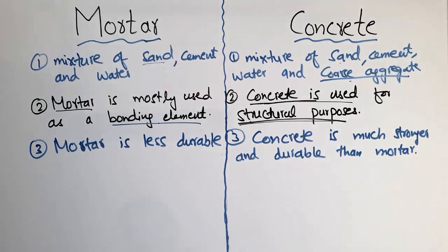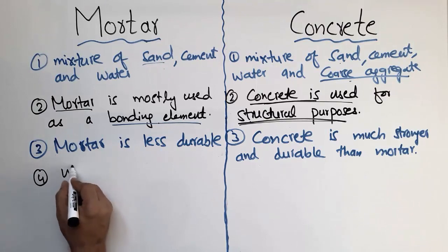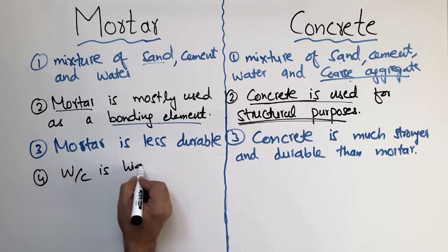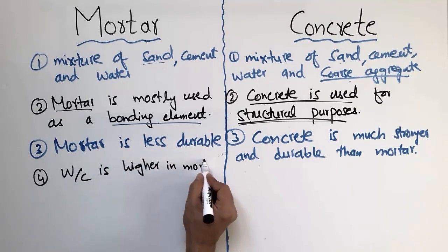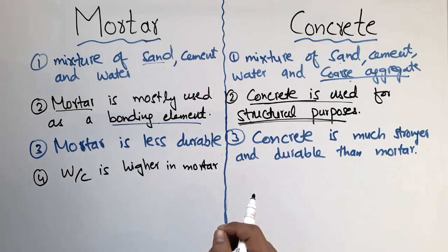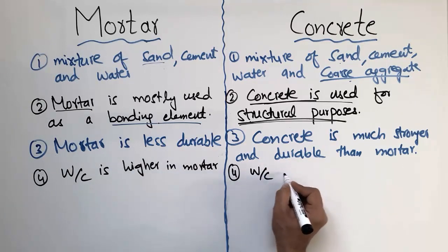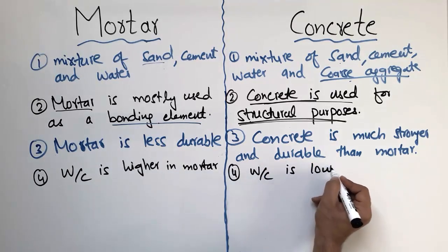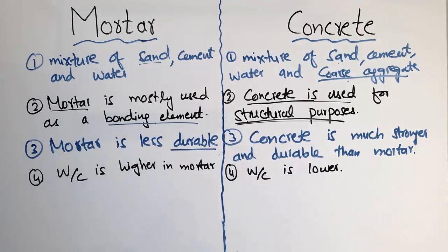The fourth difference is the water-to-cement ratio. Generally, the water-to-cement ratio is higher in mortar because it acts as a bonding material, so strength is not a primary concern. In the case of concrete, the water-to-cement ratio is lower than that of mortar because concrete is designed for strength.